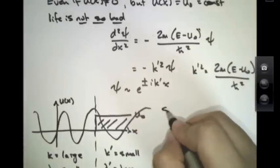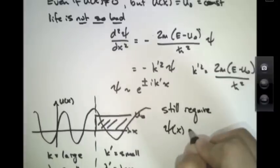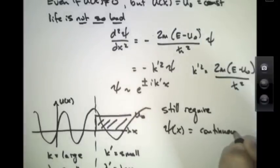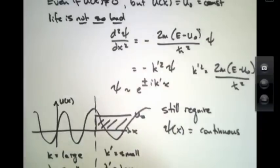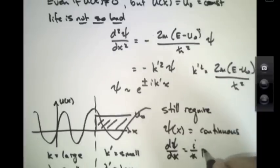Now, we still require psi of x to be continuous at this boundary. And we have to require that d psi dx is continuous, because this is related to the momentum, and we want that to be continuous.